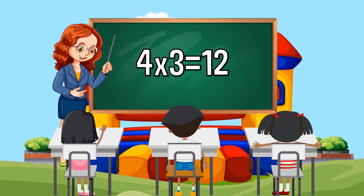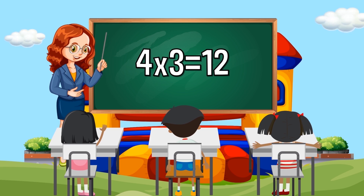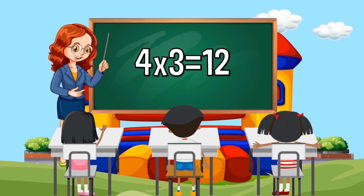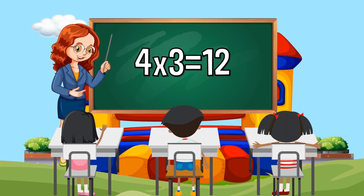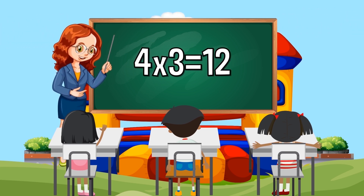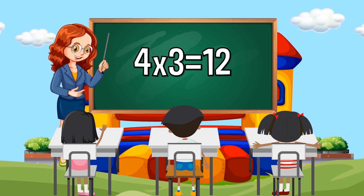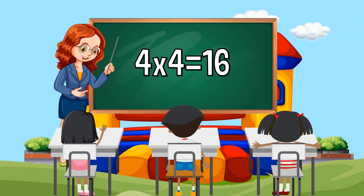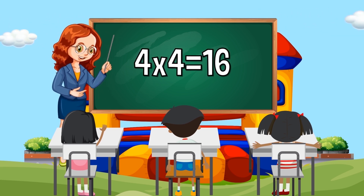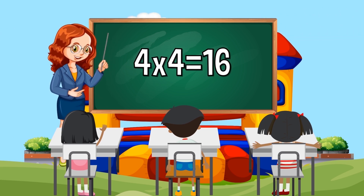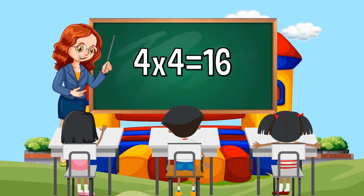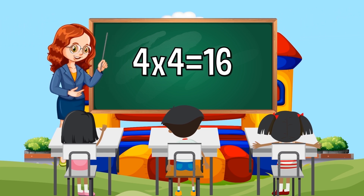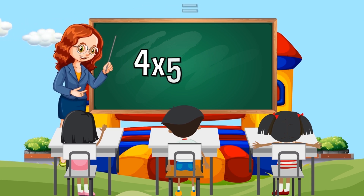Four times three equals twelve. Four times four equals sixteen.